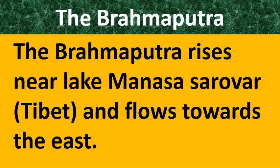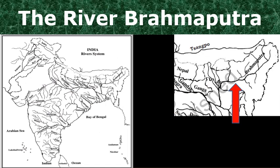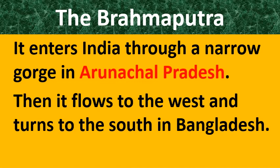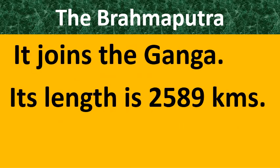The Brahmaputra River rises near Lake Mansarovar — it is in Tibet, today occupied by China — and it flows towards the east. River Brahmaputra enters India through a narrow gorge in Arunachal Pradesh, then flows to the west and turns to the south in Bangladesh. It joins Ganga and the total length of River Brahmaputra is 2,589 kilometers.